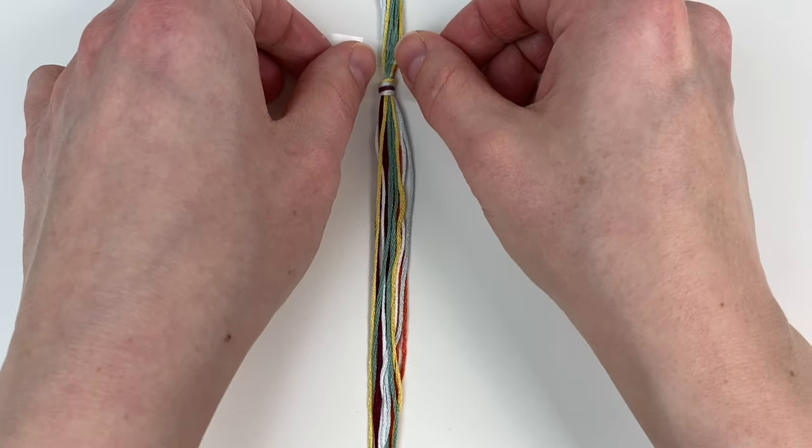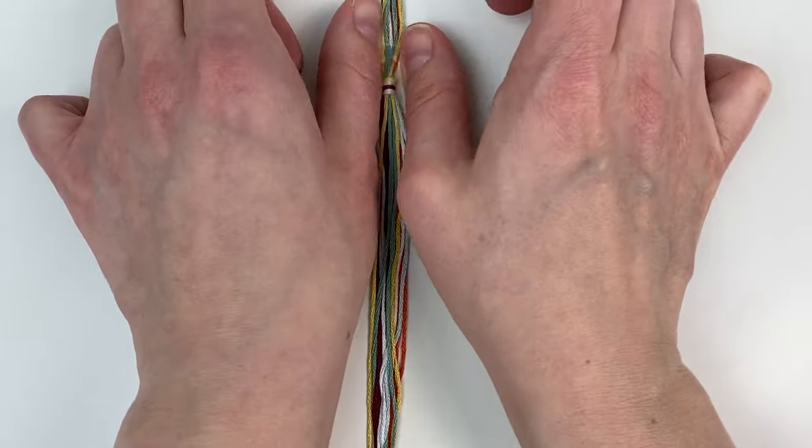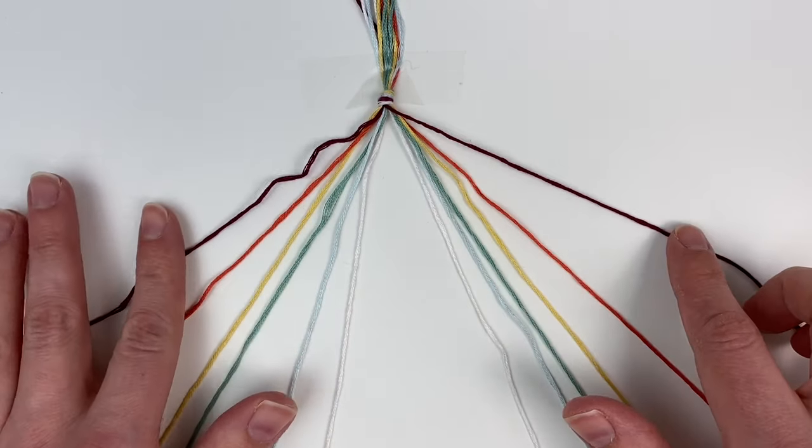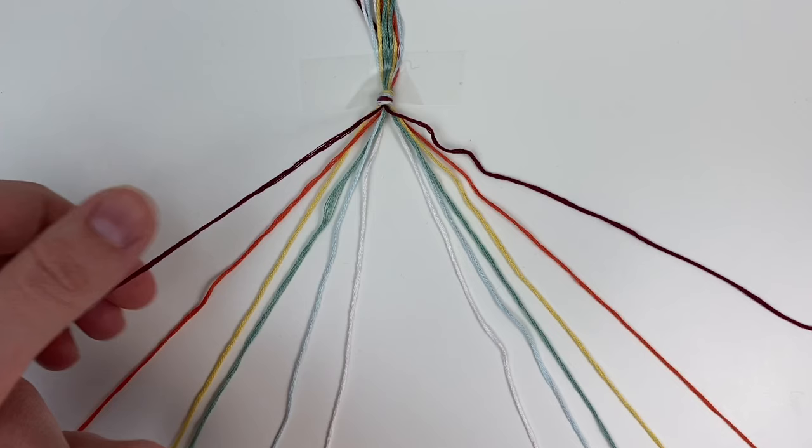Then just tape it down to your desk and you're going to separate the cords so there's the same amount on the left and the right and that the colors are lined up the same. The knots you need to know for this bracelet are called the forwards knot and the backwards knot. Both of them are just two double half hitch knots, but one's going forward and one's going backward.